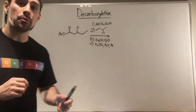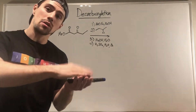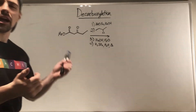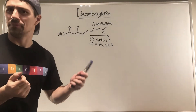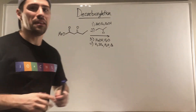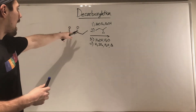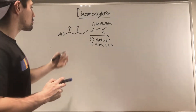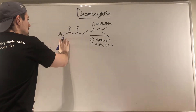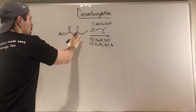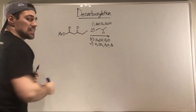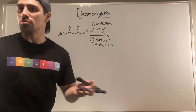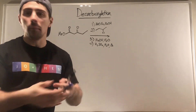Let's do one more example and we'll call it a video. One more example, then let's close the book on decarboxylation. I got some inspiration and wanted to spice it up a little bit. We see we have a beta-keto ester because we see the ester right here, and then alpha-beta, we've got the ketone.